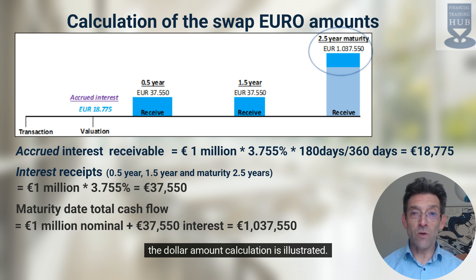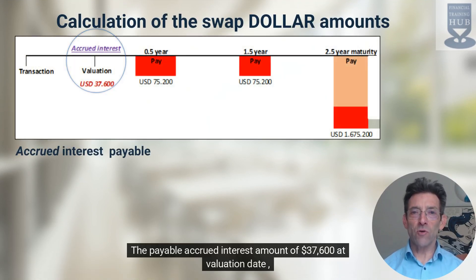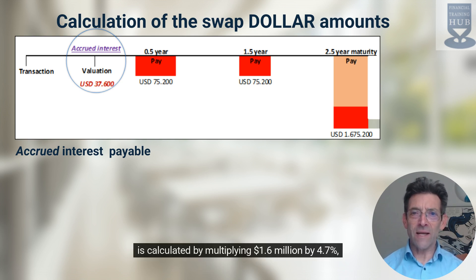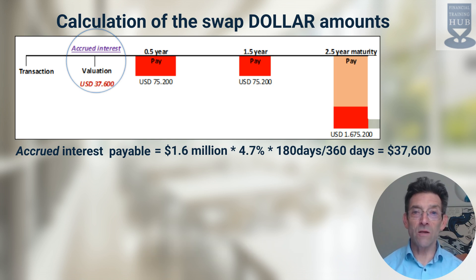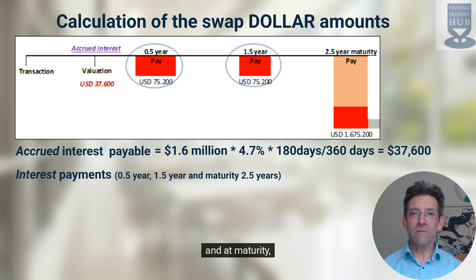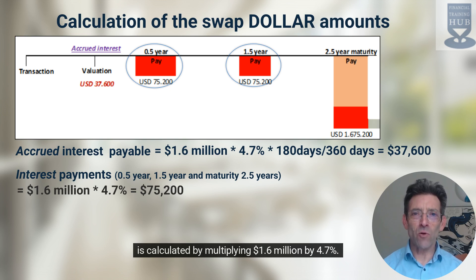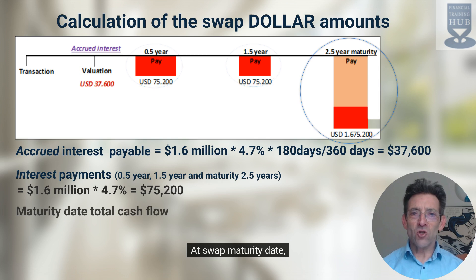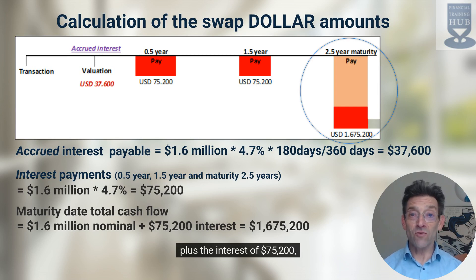Next, the dollar amount calculation is illustrated. The payable accrued interest amount of $37,600 at valuation date is calculated by multiplying $1.6 million by 4.75% multiplied by 180 days divided by 360 days. The future swap interest payments of $75,200 after half a year, one and a half years, and at maturity two and a half years from valuation date, is calculated by multiplying $1.6 million by 4.75%. At swap maturity date, the nominal amount of $1.6 million is received plus the interest of $75,200, therefore $1,675,200 in total.